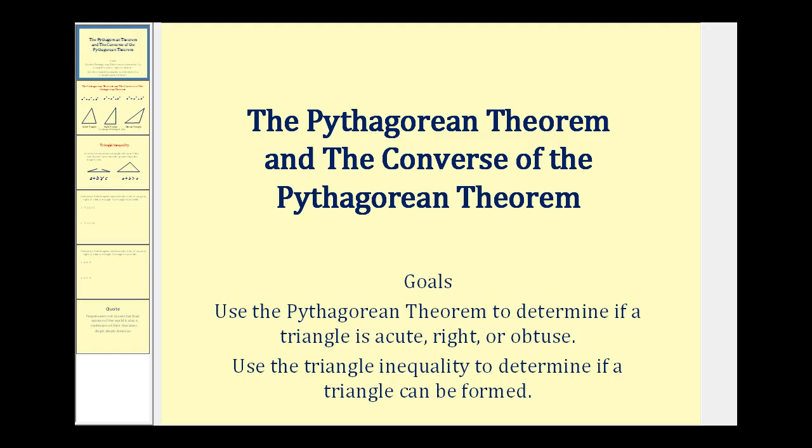Welcome to a video on the Pythagorean Theorem and its converse to determine if a triangle is an acute triangle, a right triangle, or an obtuse triangle. We'll also take a look at the triangle inequality to determine if a triangle is even possible given the length of three segments.